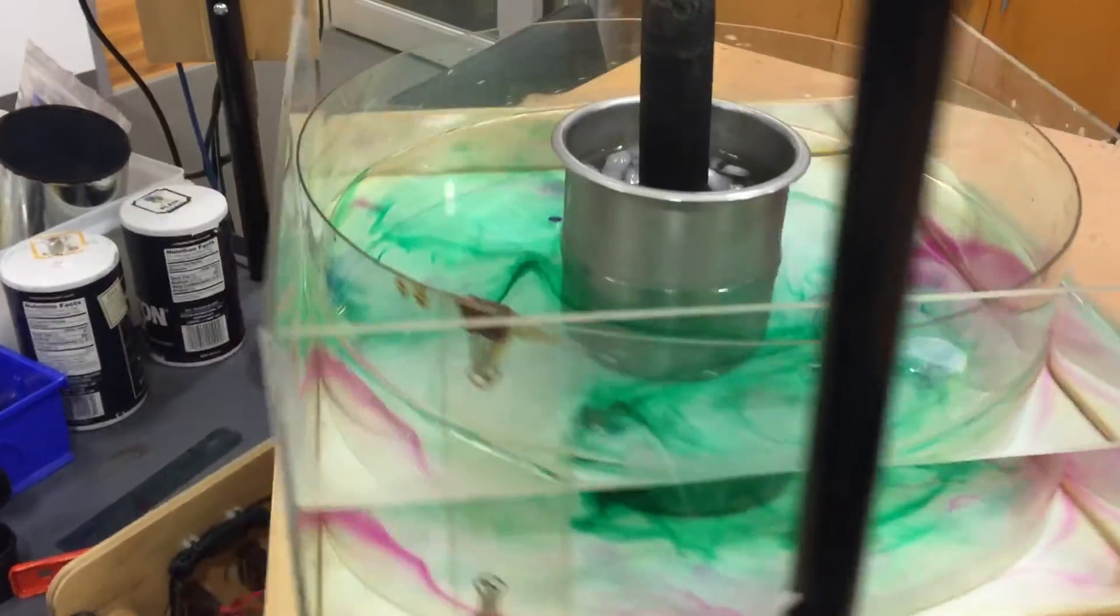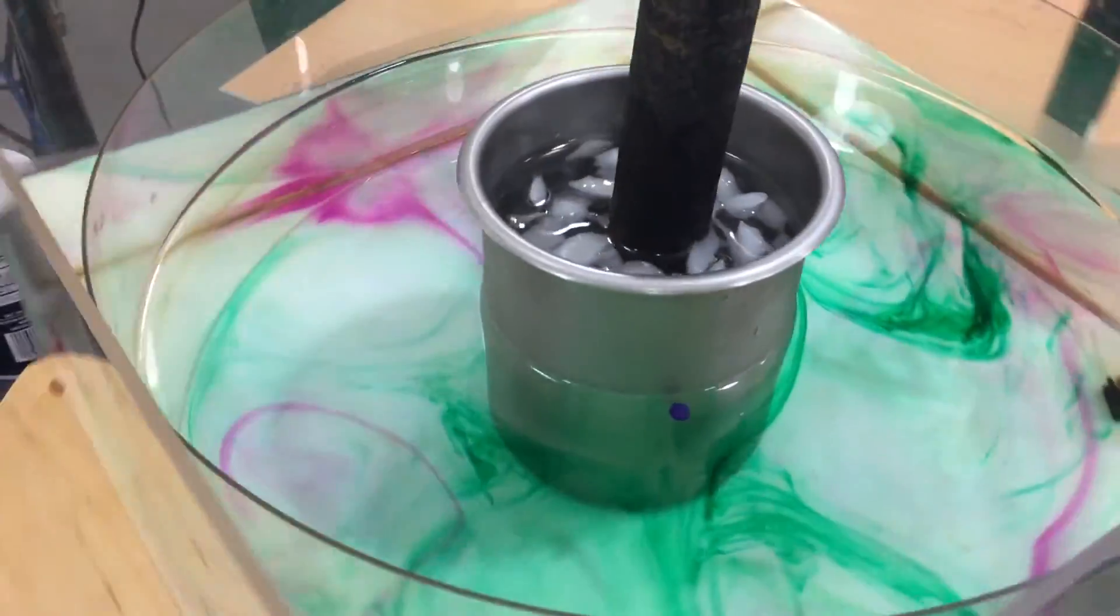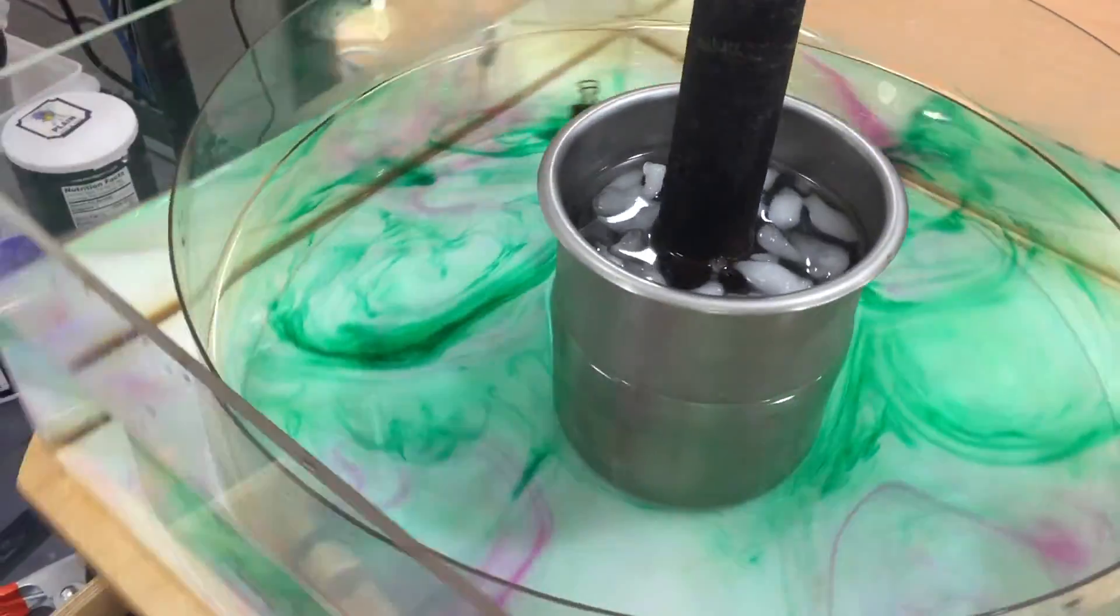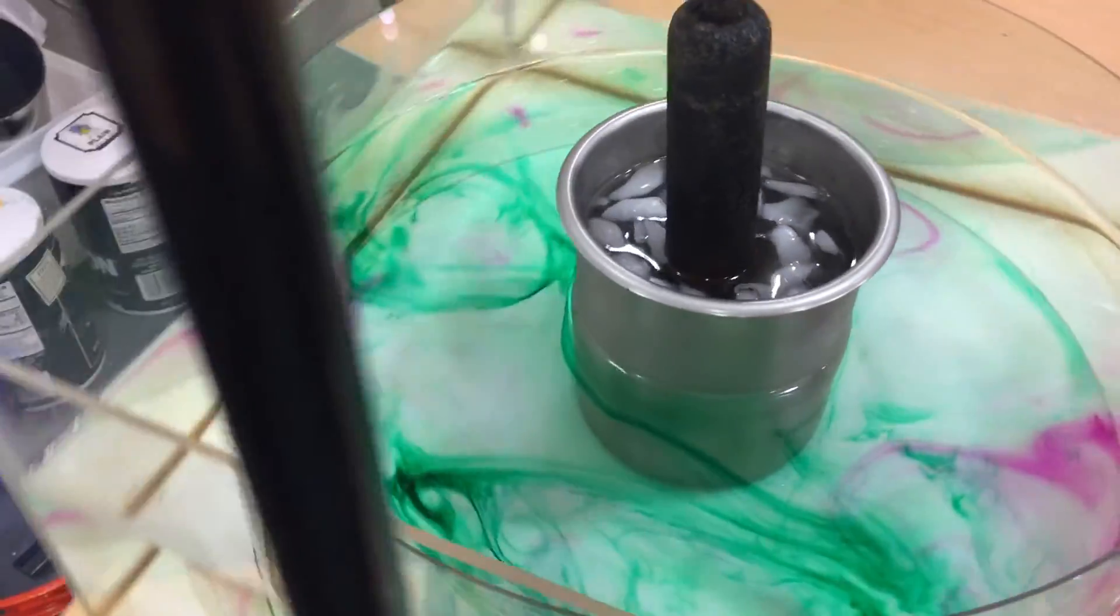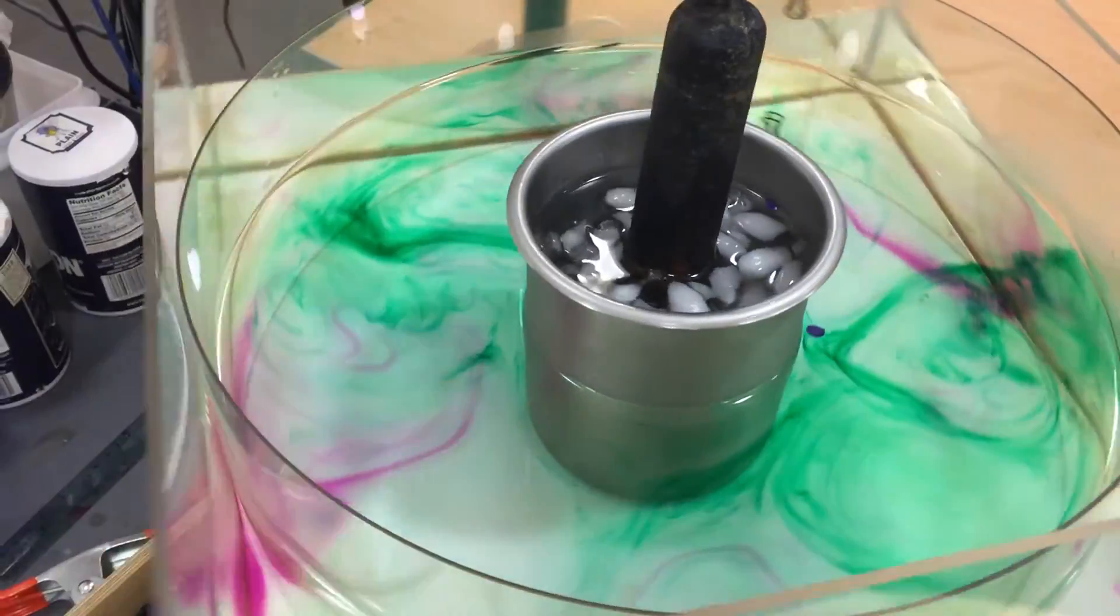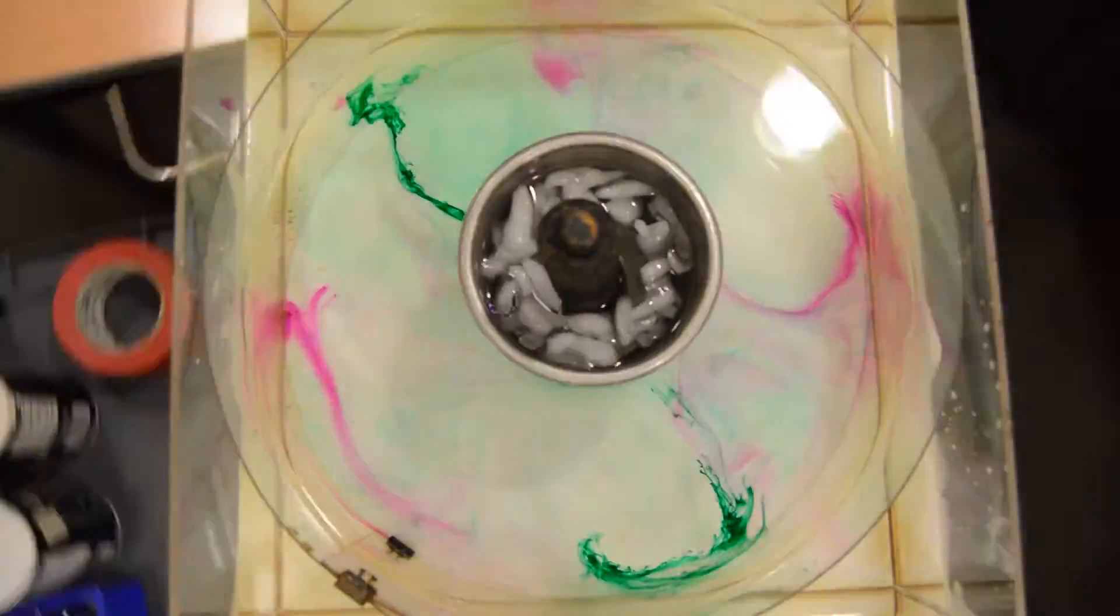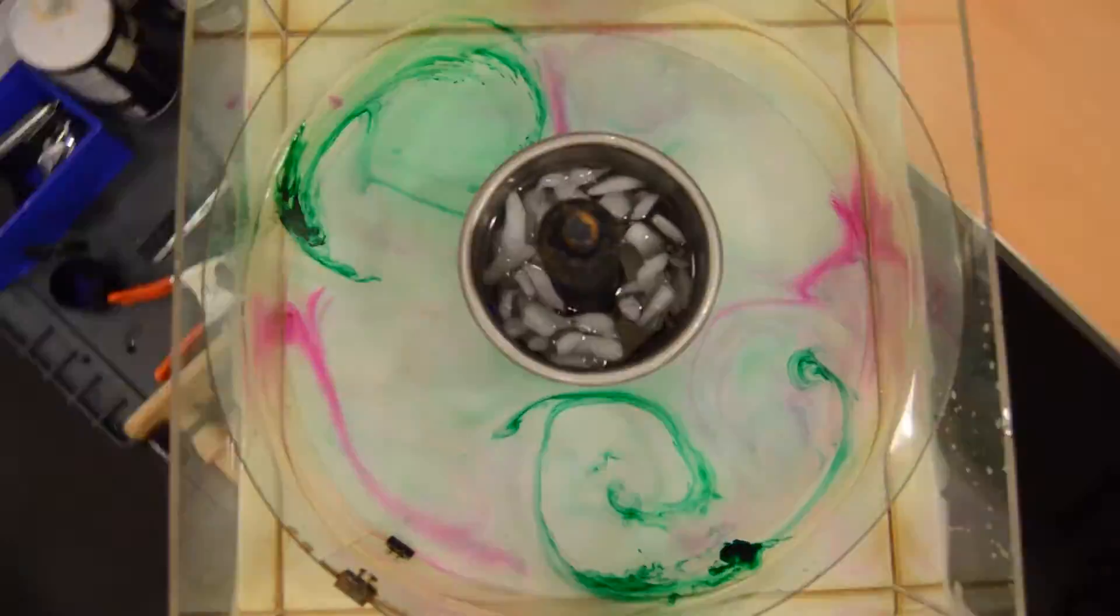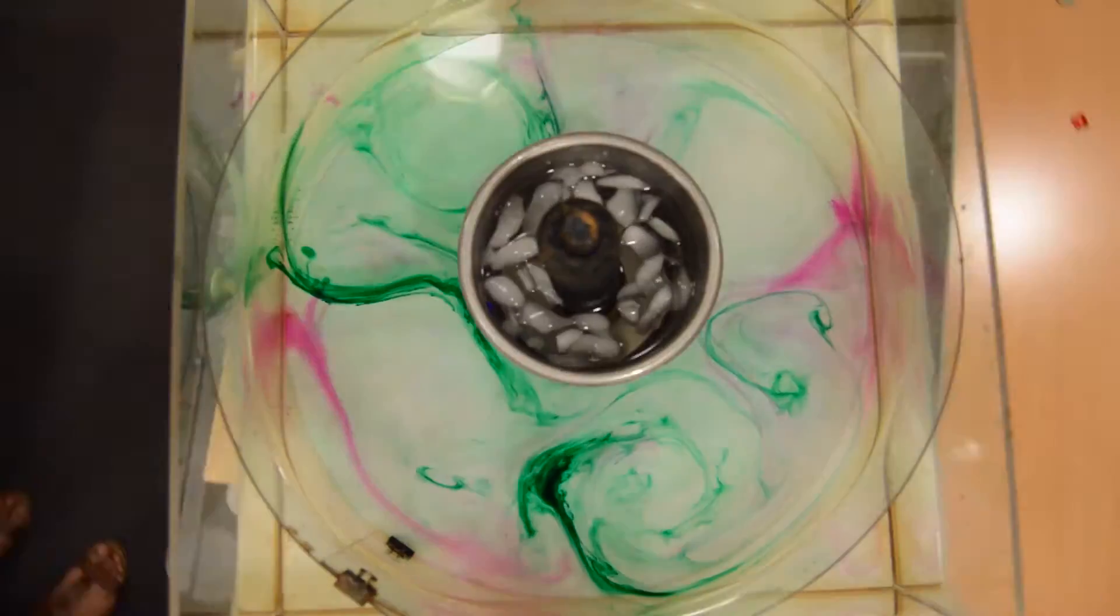Our system is set up such that we have a slow-moving flow in a tank rotating much faster at 10 rotations per minute. This ratio of much smaller velocity to a larger angular frequency tells us that our system has a low Rossby number, and we see that the Coriolis force will dominate in the formation of these large spirals relative to the size of the system.